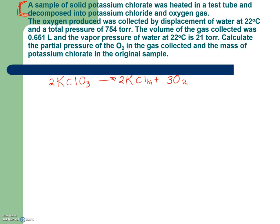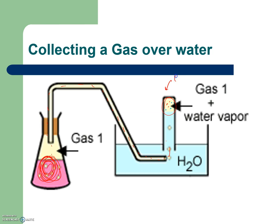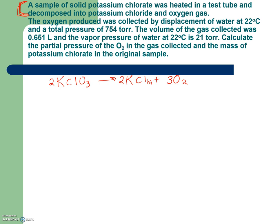So it says the oxygen produced was collected by displacement of water at 22 degrees and a total pressure of 754 torr. So that's this, the reaction, this KClO3 is in here. And we collected the O2 by displacement of water. That's what that means. So it was collected by displacement of water at 22. So I'm just going to keep a little list of things. So 22 degrees Celsius, because I don't like these paragraphs. A total pressure, so P total is equal to 754 torr. The volume of gas collected, so volume is equal to 0.651 liters. And the vapor pressure of water at 22 degrees Celsius is 21 torr. So vapor pressure of H2O, meaning how much it contributes to the pressure, at 22 degrees Celsius is 21 torr.